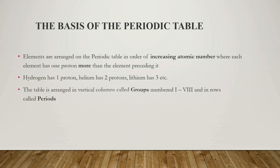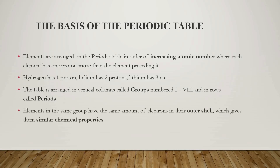If you observe the structure of the periodic table, you will notice that the table is arranged in vertical columns called groups — there are eight groups in total. Elements are also arranged in rows called periods. The rows are called periods, and the columns are called the groups.